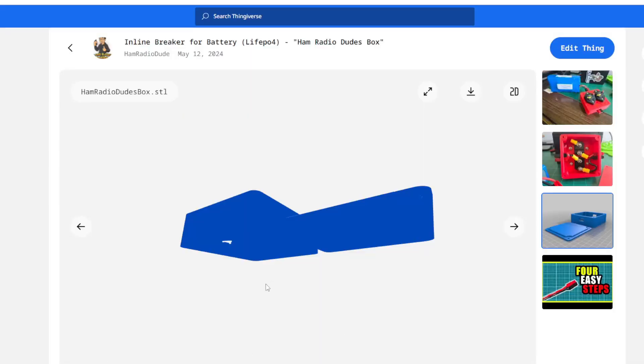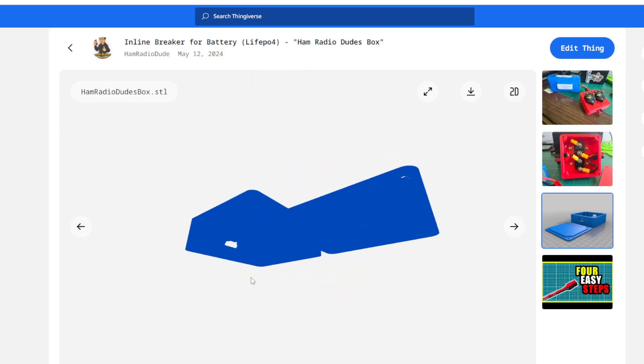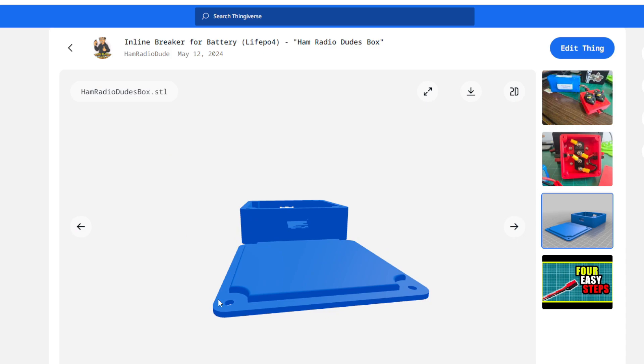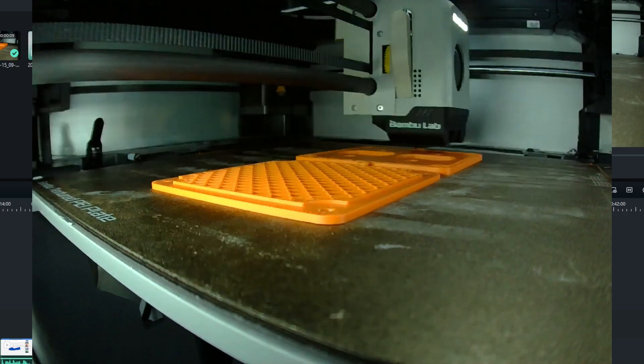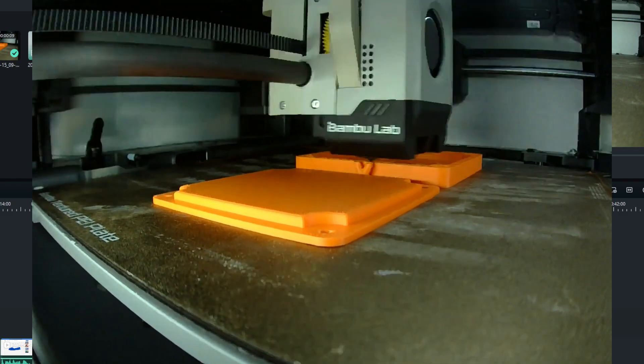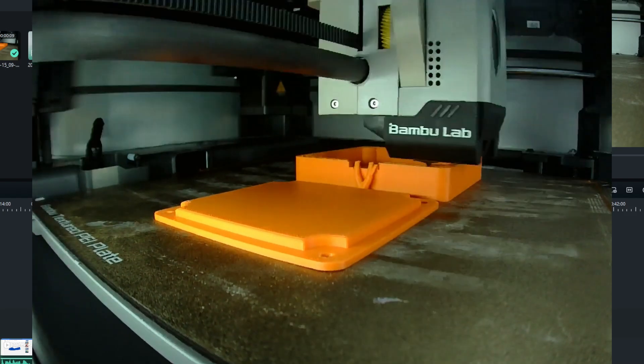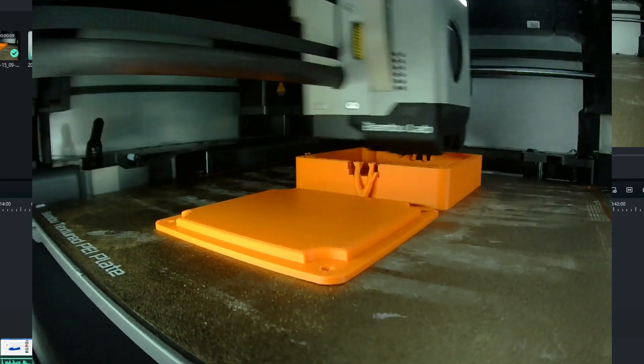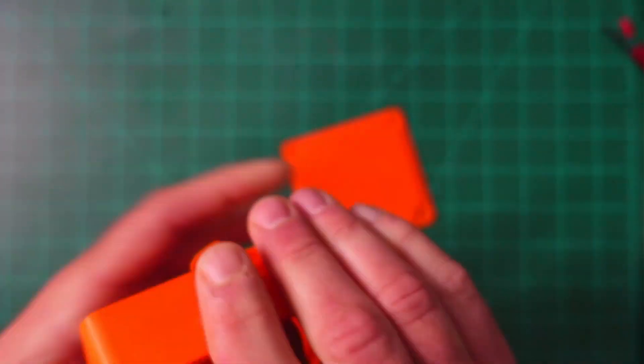First thing you're going to want to do is go to Thingiverse.com and download Ham Radio Dude's box. If you don't have a 3D printer, this file will eventually be available on my Etsy store. You could also go to your local library - many libraries have 3D printers available. In this case I used ASA filament with my Bamboo X1 Carbon. Next, if you printed this, remove the supports that printed with the box.